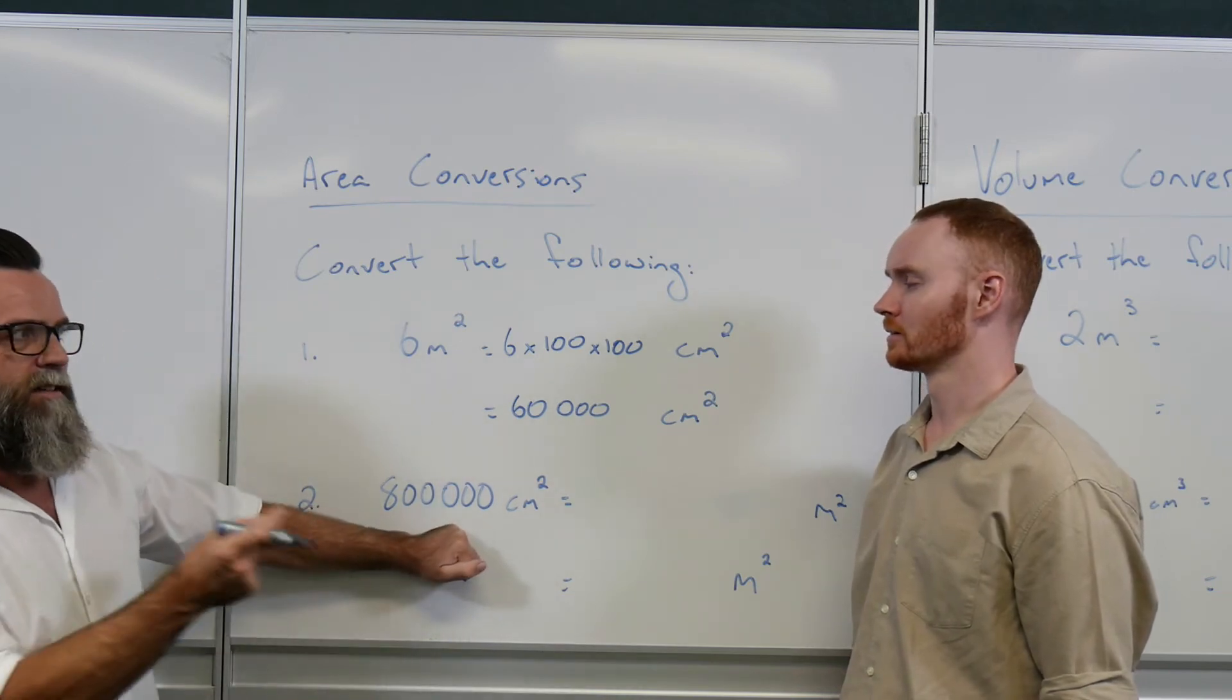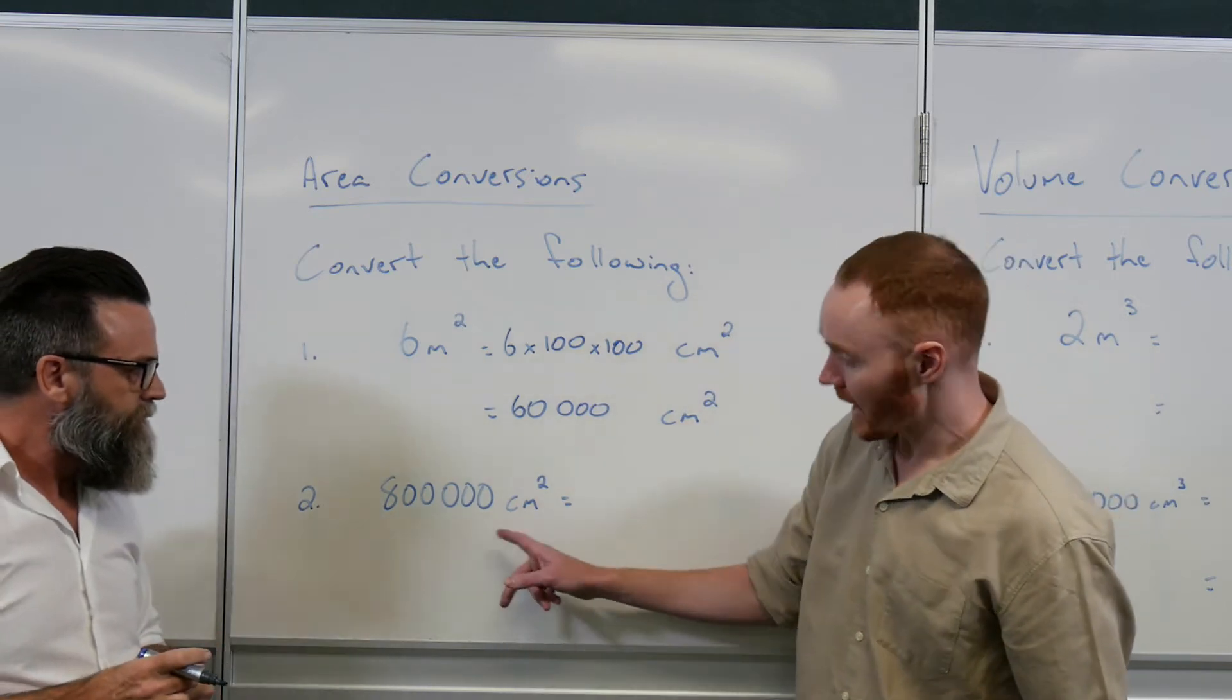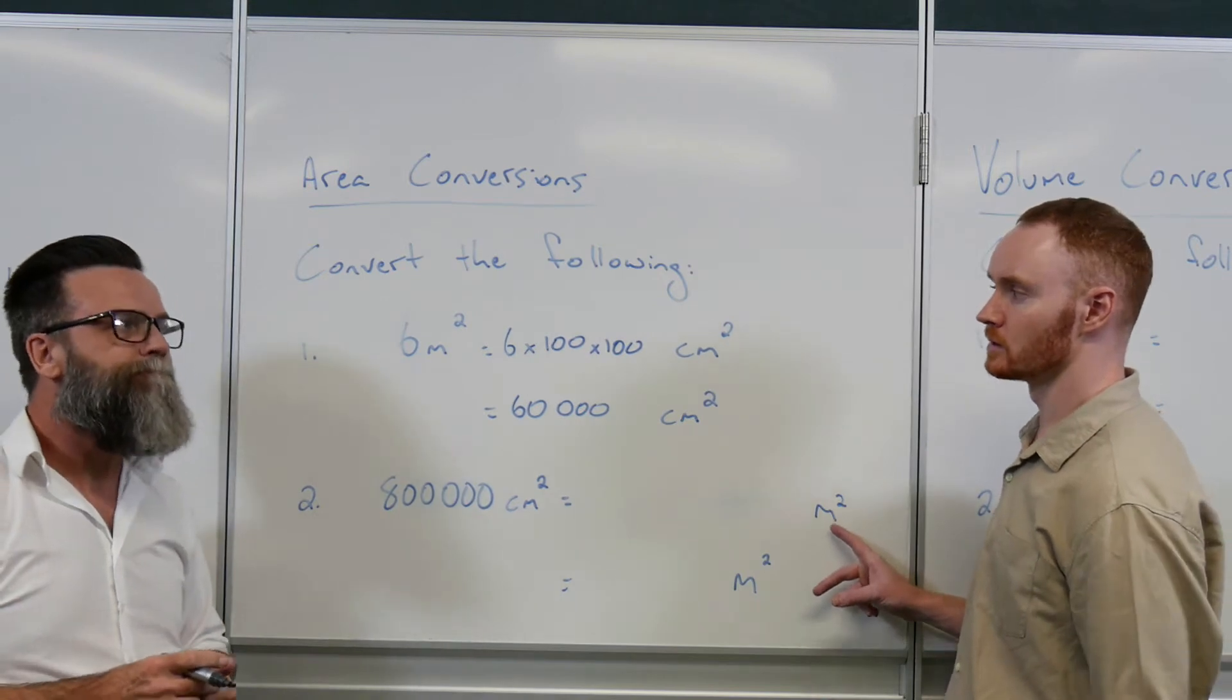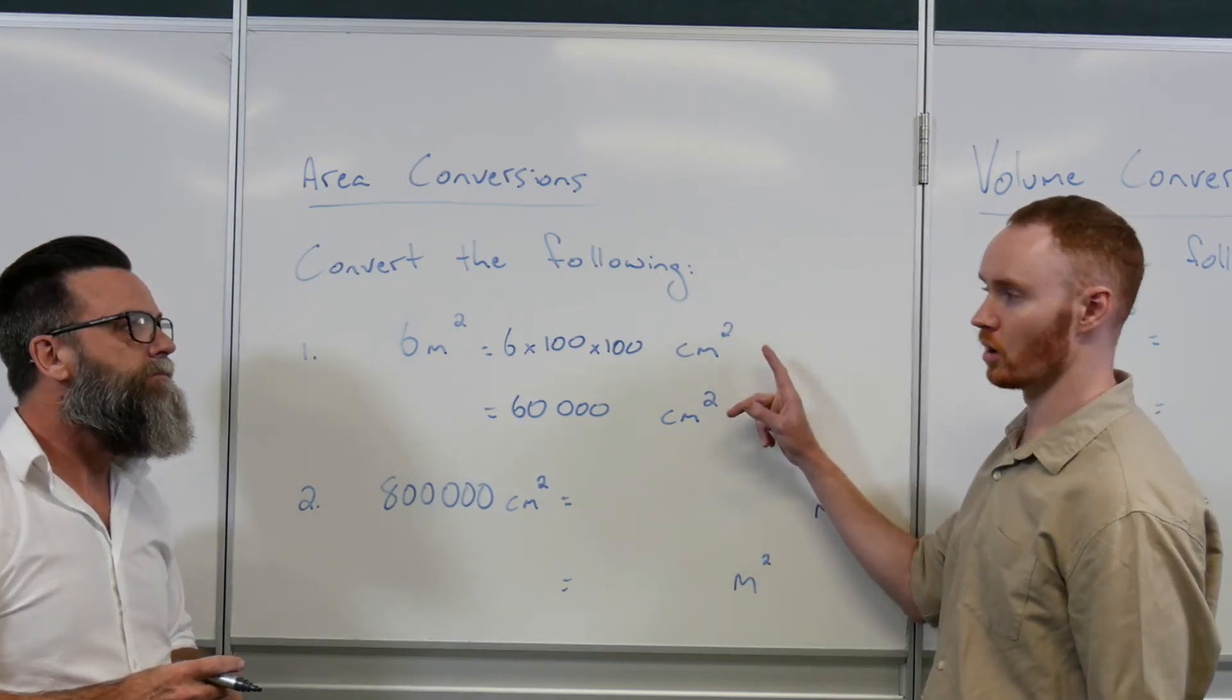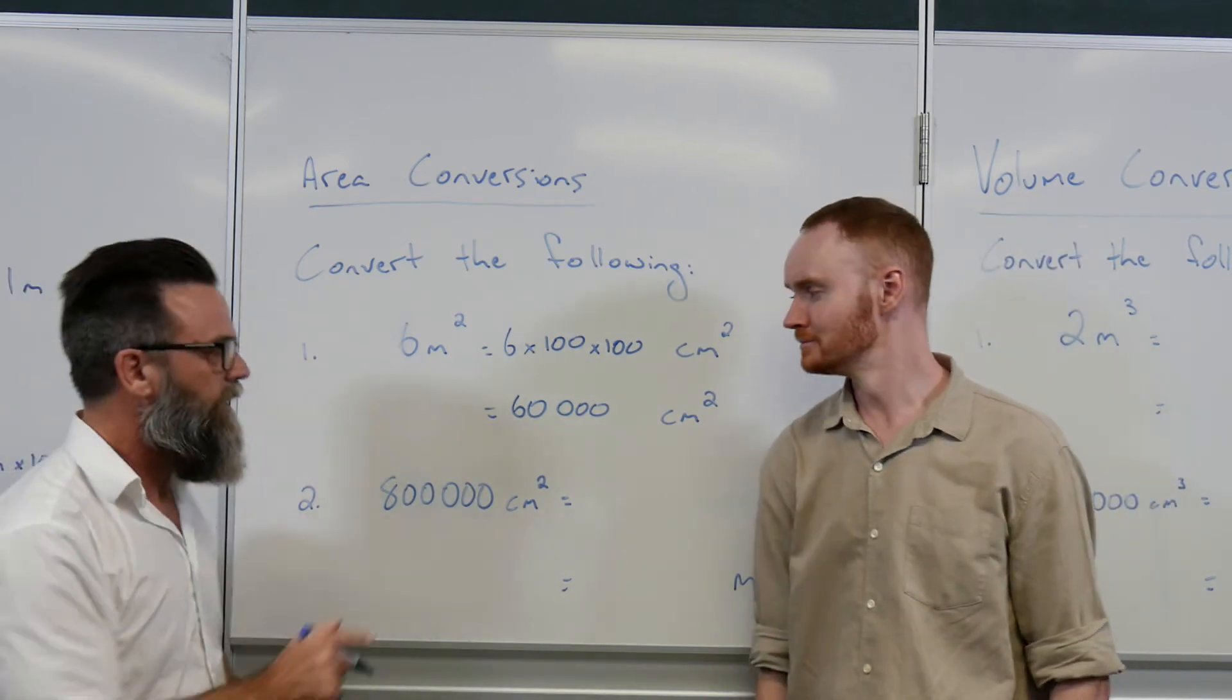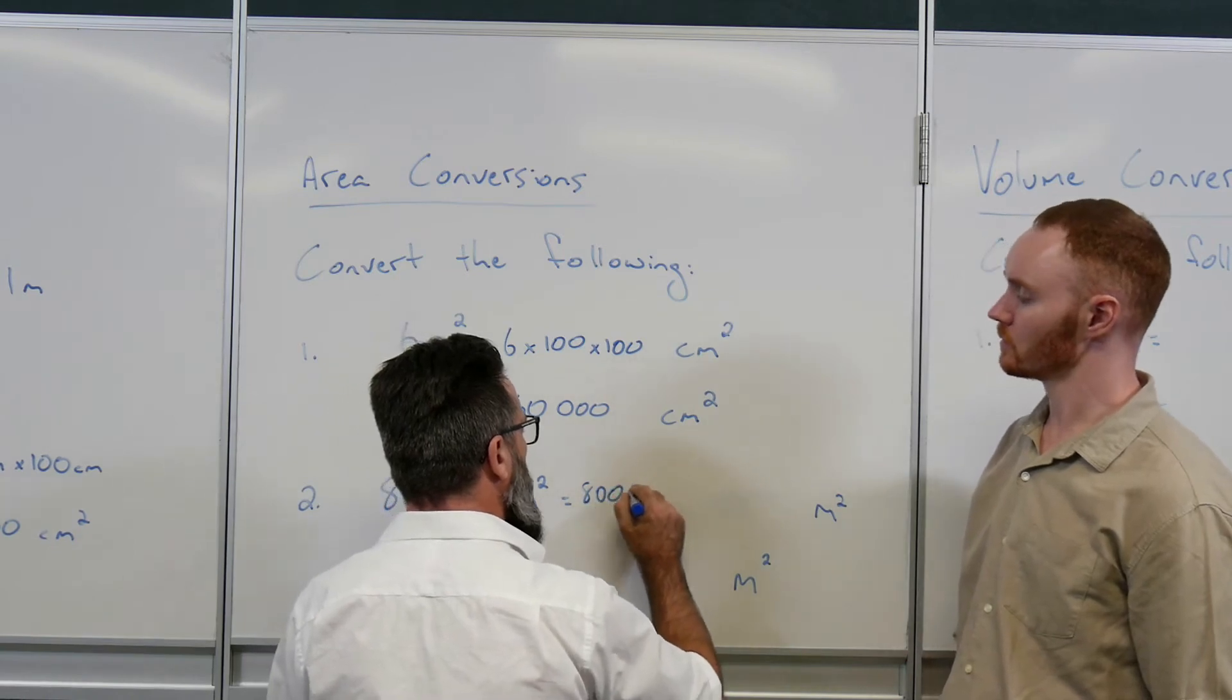What about this one, sir, starting to go backwards? So in this case here you're looking at 800,000 centimeters squared and you want to go back to meter squared. Does that mean you would have to do the opposite of what you've just done up here in example one? This guy is good! That's exactly right. So over here we start with our 800,000.